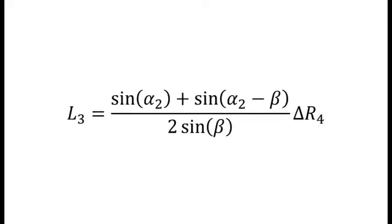Similarly, link 3 can be found using this equation: L3 equals sine of alpha 2 plus sine of alpha 2 minus beta over 2 sine of beta times delta R4.